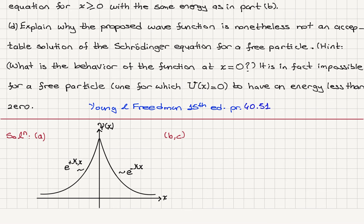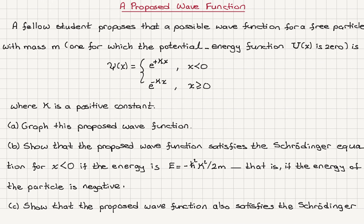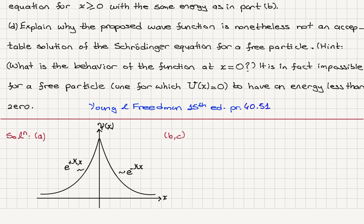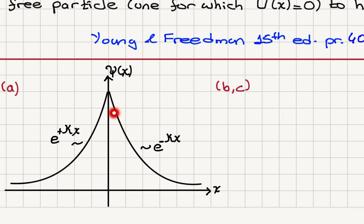It is in fact impossible for a free particle — one for which the potential energy is zero — to have an energy less than zero. The function is e to the plus kappa x for x negative, and e to the minus kappa x for x positive, which is an exponential decay. Since x is positive and kappa is positive, the function is exponentially decaying in both directions away from x equals zero. This is the graph of the proposed wave function.